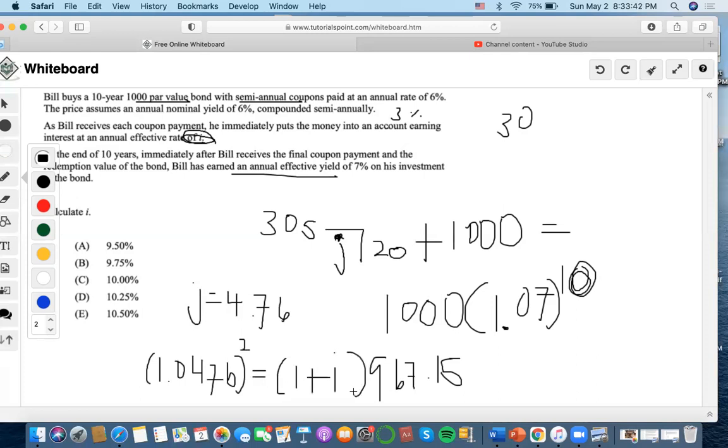So we're going to do 1.0476 squared minus 1, and we're going to get 0.09746, which is B, the final answer.